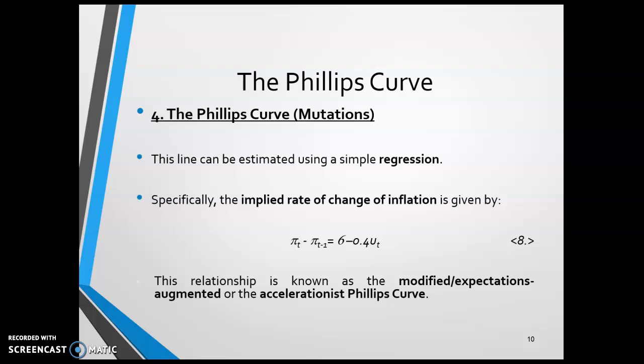And this argument, as I mentioned before, is the modified expectations-augmented, or sometimes the accelerationist Phillips Curve. Now, it turns out that this definition is what is often used to estimate the natural rate of unemployment, which will be our next discussion.